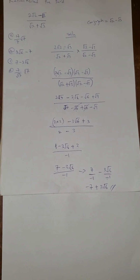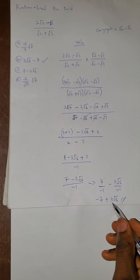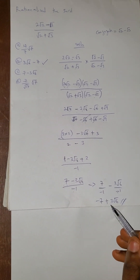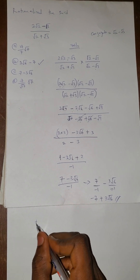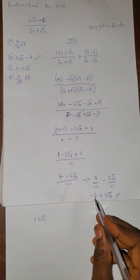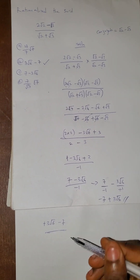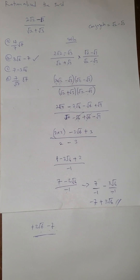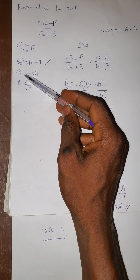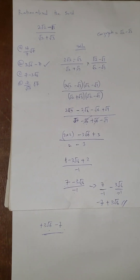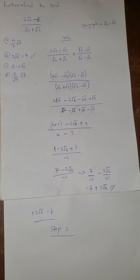We check: minus 7 plus 3√6. Observing the options, the correct answer is option B. The terms are just interchanged, but the sign of 3√6 is plus and the sign of 7 is minus. So the final answer is 3√6 minus 7, which is option B — not option C, because the sign for 7 is minus, not plus.